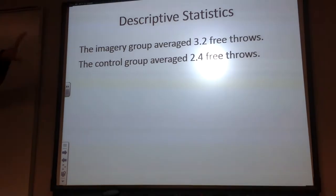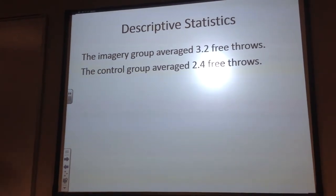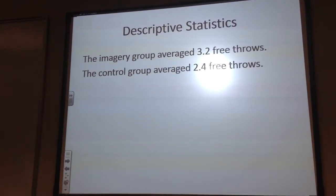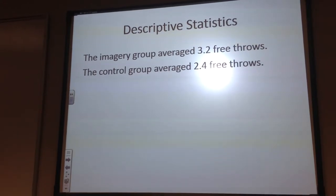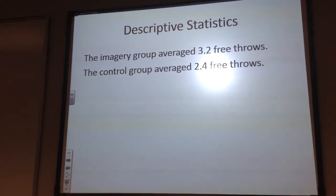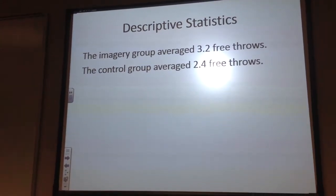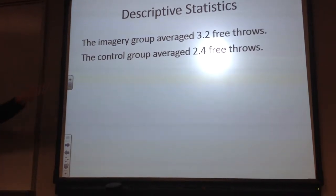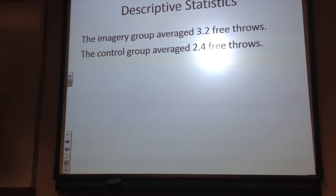A lot of times, in a perfectly distributed world, and we'll get to that in a second, the mean, median, and mode are all the same number. But when they're not the same number, that means our data is a little strange, and that's why it's important to have both. Does that help me answer your question? Okay. So if I were to write up the descriptive statistics, and you might have seen this or something similar, I would say the imagery group averaged 3.2 free throws, the control group averaged 2.4 free throws. So right off the bat, I see that there's a difference, and I think, hey, this is great. My imagery program worked.